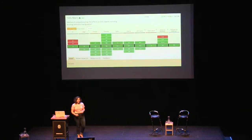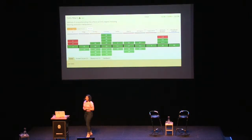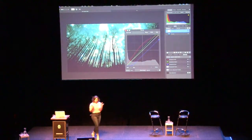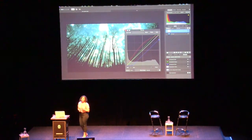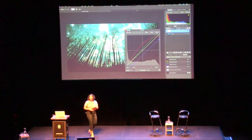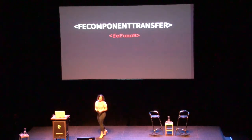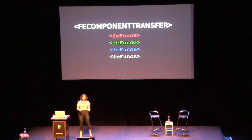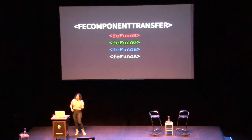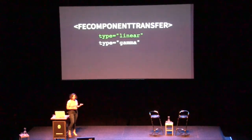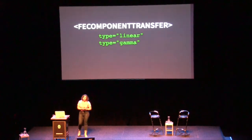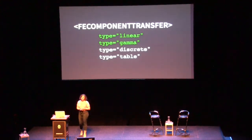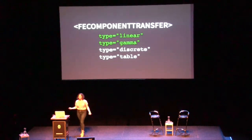SVG filters are more widely supported than anything else I'll talk about here, which is great because they're also the most powerful — but they are the most complex. What we want is to get rid of some of that blue light and apply more yellow light. You can do this with per-channel manipulation using FeComponentTransfer. FeComponentTransfer is a wrapper function for FeFuncR, FeFuncG, FeFuncB, and FeFuncA, and it allows us to manipulate these channels individually — which we don't have in CSS. There are four types: we'll mostly talk about linear and gamma, which are the direct transfer functions. There's also discrete and table.